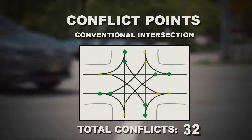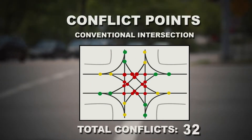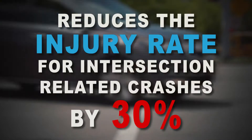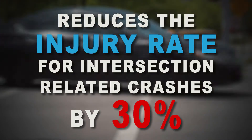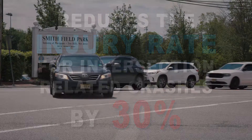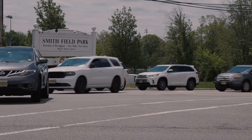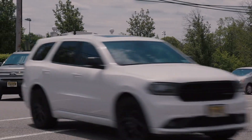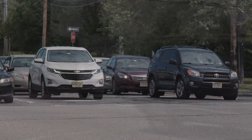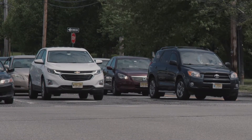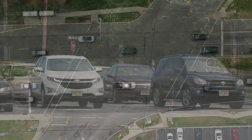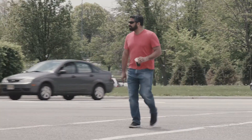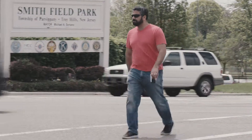The MUT has many safety benefits, including reducing the number of conflict points from 32 to 16 and reducing the injury rate of intersection-related crashes by 30%. MUTs are an excellent choice for heavily traveled intersections with moderate left turn volumes. When implemented at multiple intersections along a corridor, MUTs can reduce delay, improve travel times, and create more crossing opportunities for pedestrians and bicyclists.